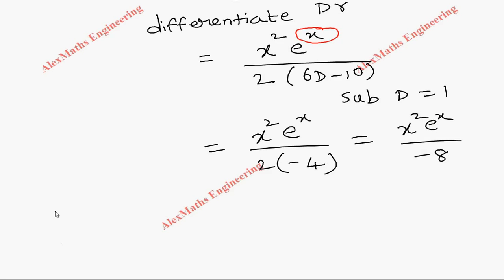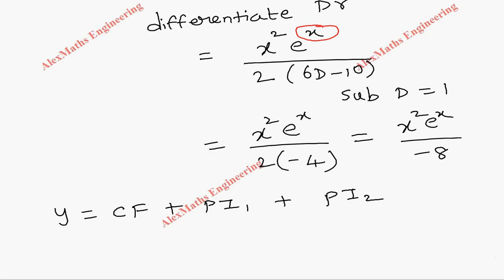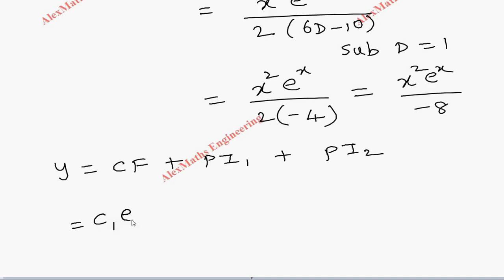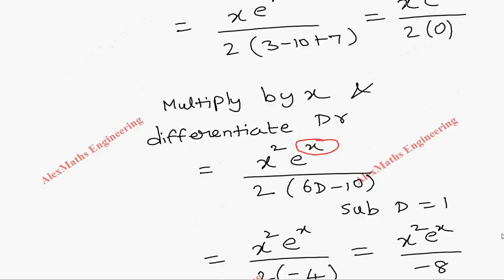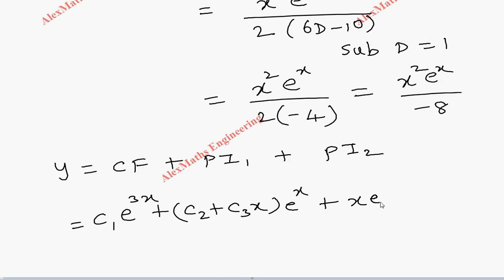The complete solution is y = CF + PI₁ + PI₂ = c₁e^(3x) + (c₂ + c₃x)e^x + x·e^(3x)/8 - x²·e^x/8.